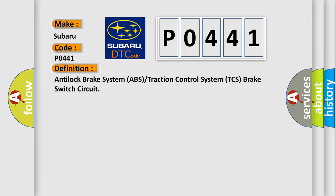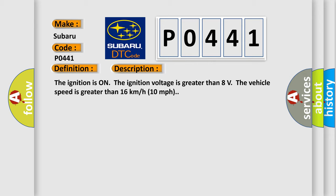And now this is a short description of this DTC code. The ignition is on, the ignition voltage is greater than 8 volts. The vehicle speed is greater than 16 kilometers per hour, 10 miles per hour.